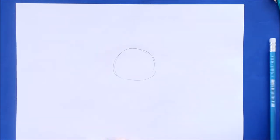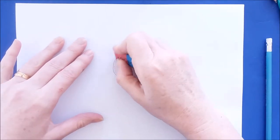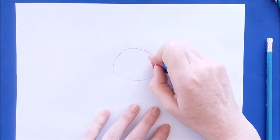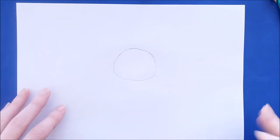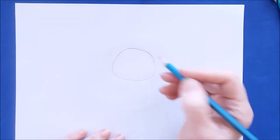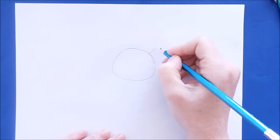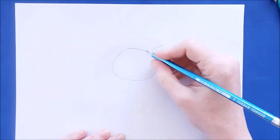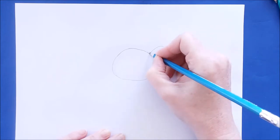And once you have the circle done, you can begin to work on the other parts of this armadillo's face. So we're going to add to the armadillo the ears, and the ears are going to be little upside-down letter U's.